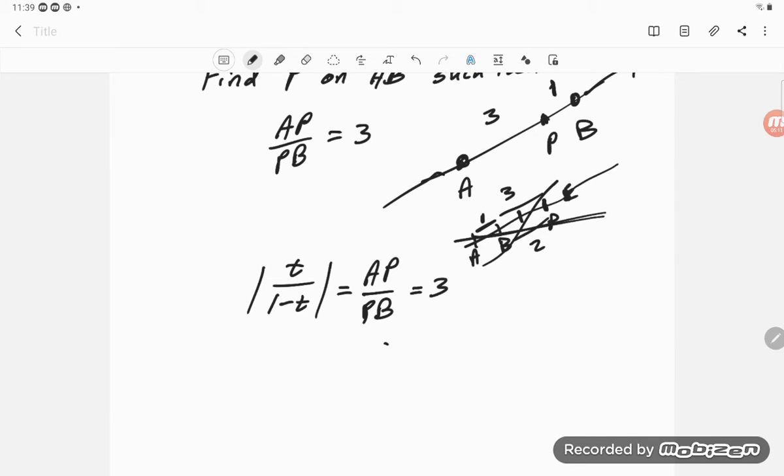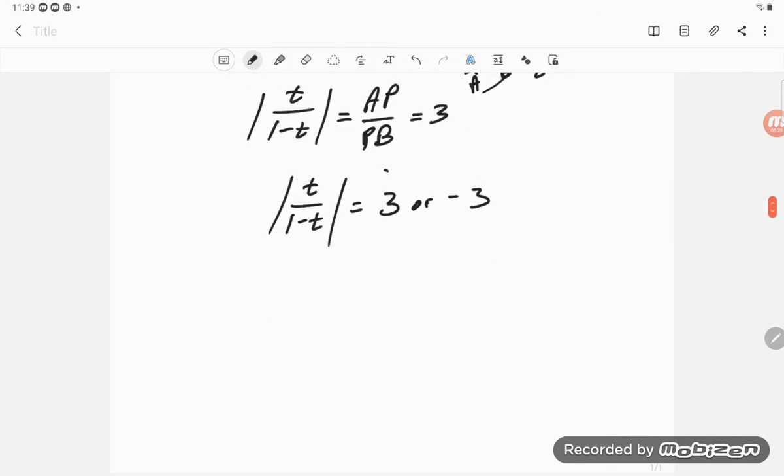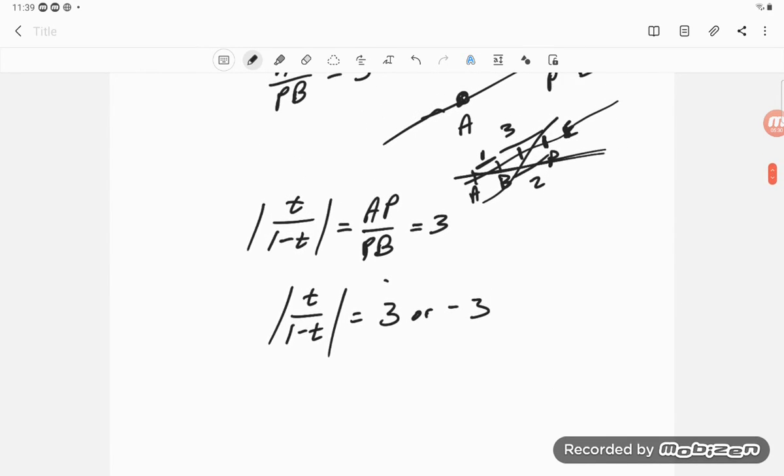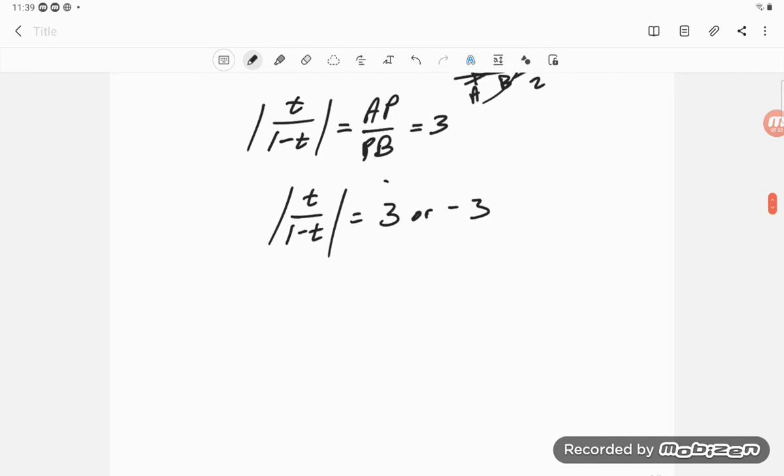And so we have the absolute value of t over 1 minus t is equal to either 3 or negative 3. So it looks like there probably are two answers and we'll see what we end up with here.